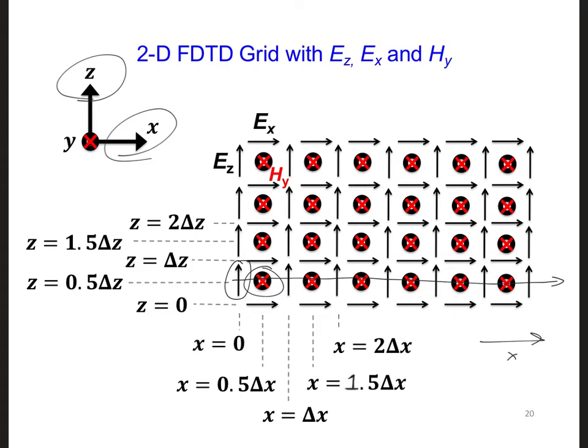Now we also have E_x field components between the H_y's in the z-direction, so that we have alternating electric and magnetic field components in the z-direction. We can use the same central differencing approach in the z-direction using H_y's and E_x's, as we did in the x-direction using H_y's and E_z's.